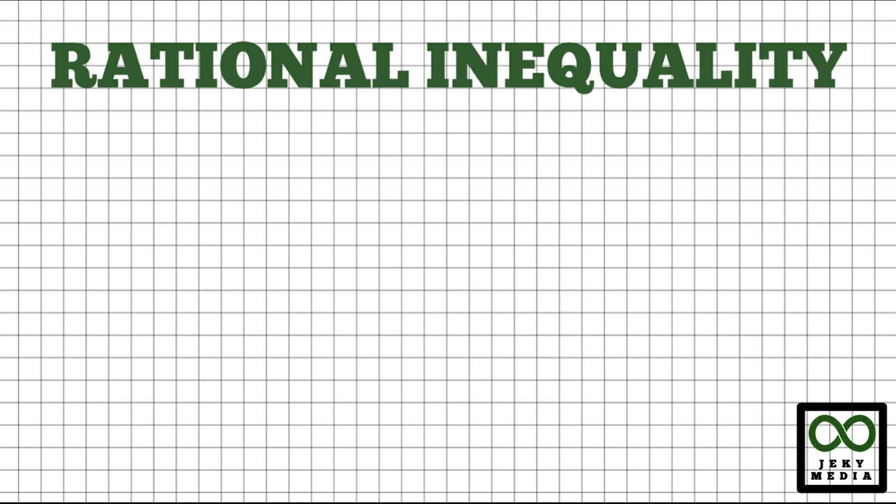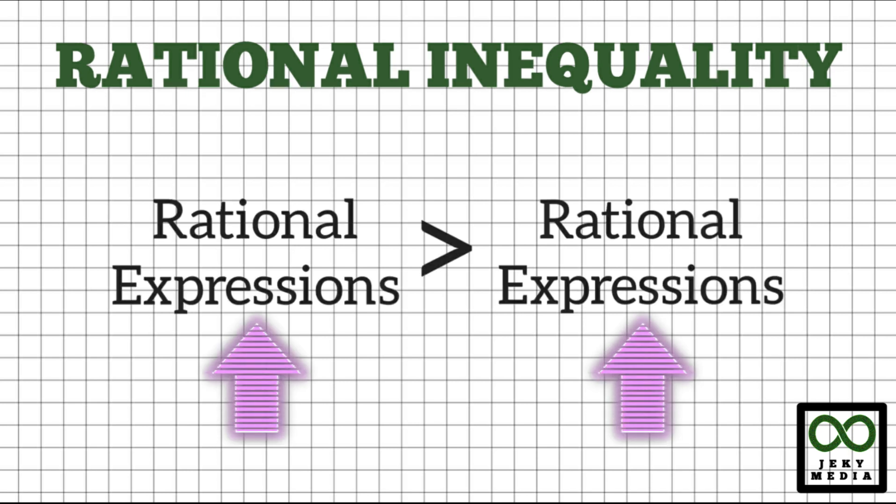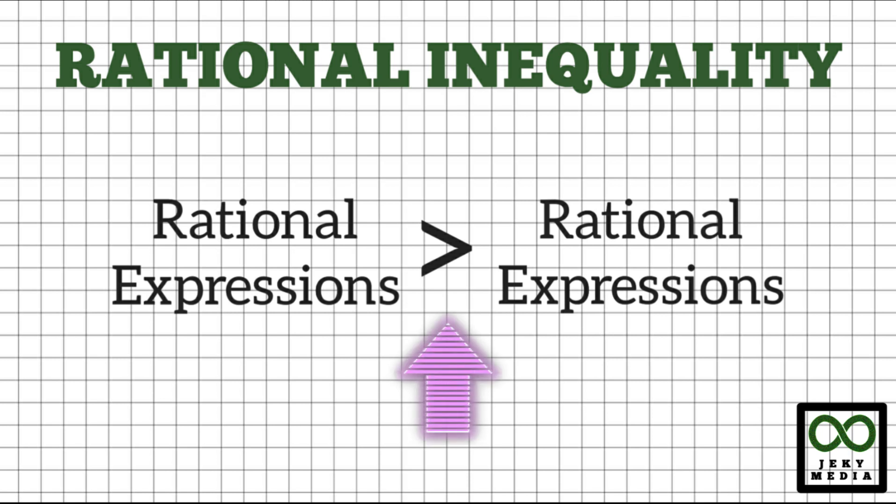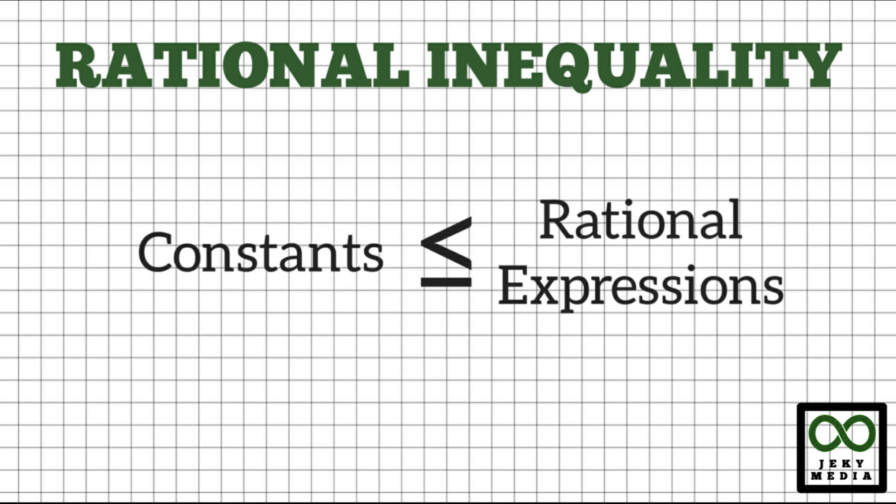Now, let's have rational inequality. A rational inequality is an inequality that contains rational expressions. It contains inequality signs such as greater than, lesser than, greater than or equal to, or lesser than or equal to, in between rational expressions. Also, it may contain constant on the left side, or it can be found on the right side.